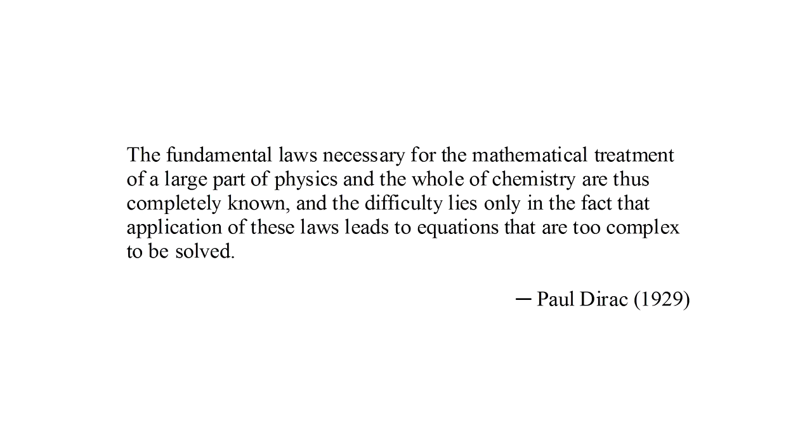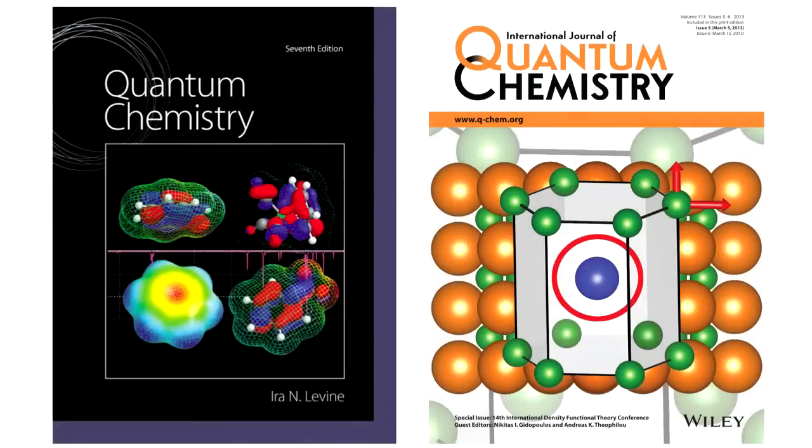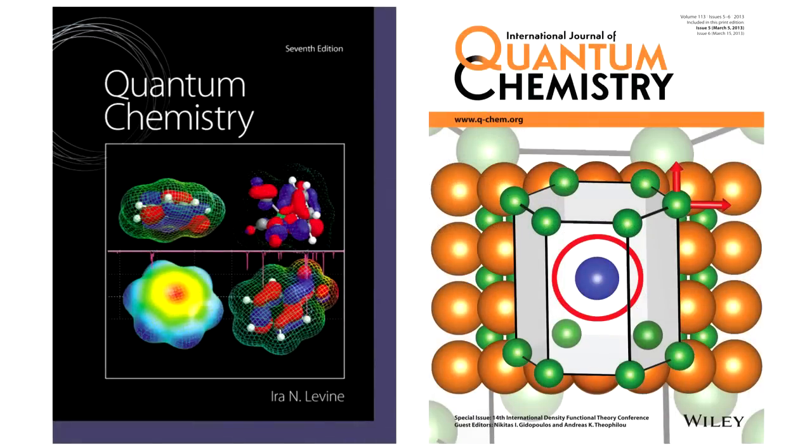This difficulty has lessened in the decades since, especially as ever more powerful computers have enabled increasingly sophisticated numerical calculations. Today, using the techniques of quantum chemistry, it is possible to solve the Schrödinger equation for quite large systems, and understand in detail the chemistry of a wide range of molecules.